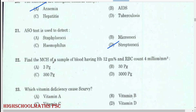Find the MCH of a sample of blood having hemoglobin 12 gram percent and RBC count 4 million per millimetre cube. Answer: 30 picograms.